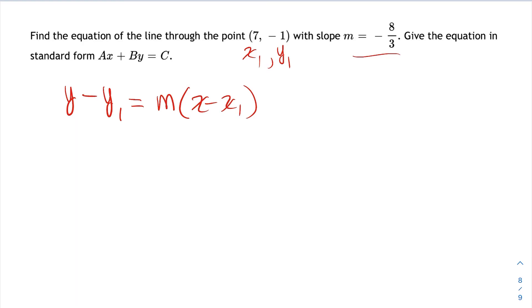Those are the two pieces of information I need, and I just plug them in. y minus y1 is the y value of the point, which is -1, equals m, which was given as -8/3, times x minus x1, which in this case is x minus 7.